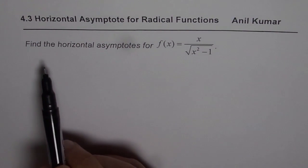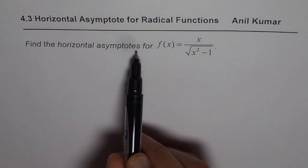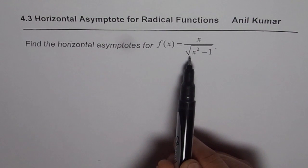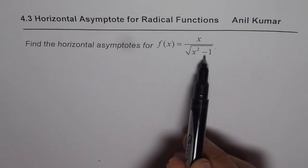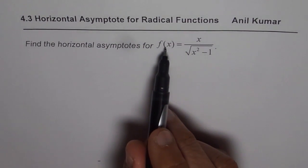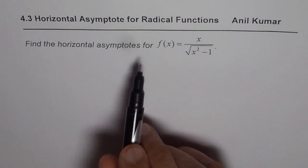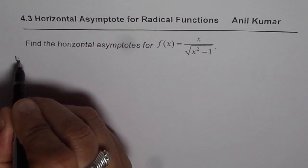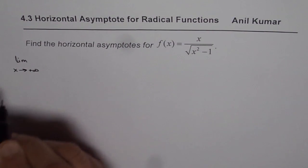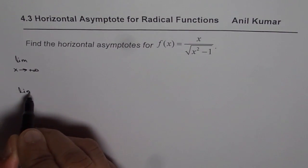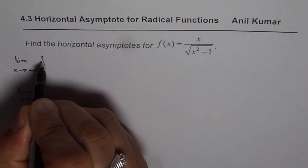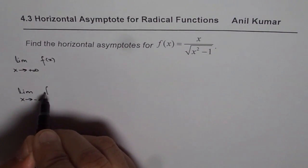The question is: find the horizontal asymptotes for the function f(x) equals x divided by the square root of x squared minus 1. When we want to find a horizontal asymptote, we are basically finding the limit of the function as x approaches positive infinity, or finding the limit of the function as x approaches negative infinity.